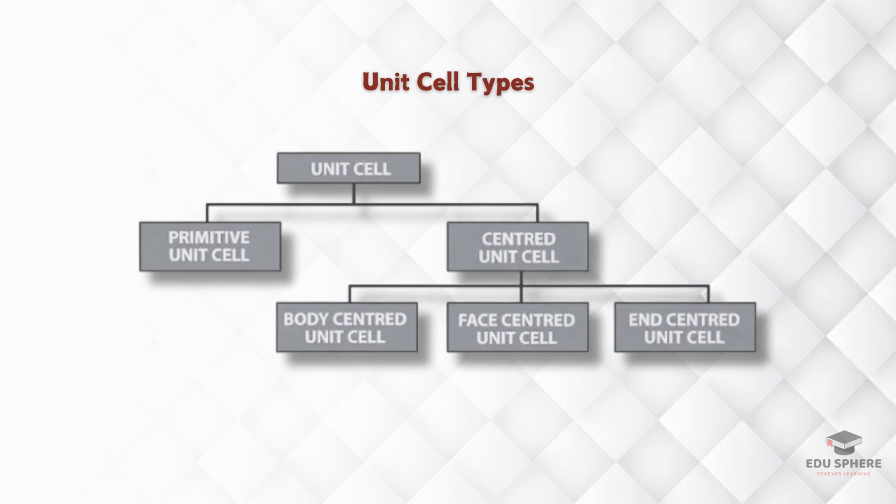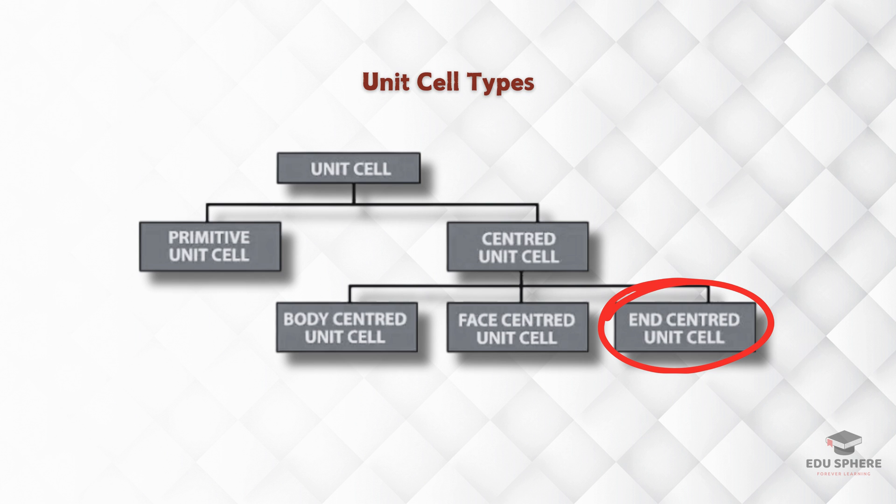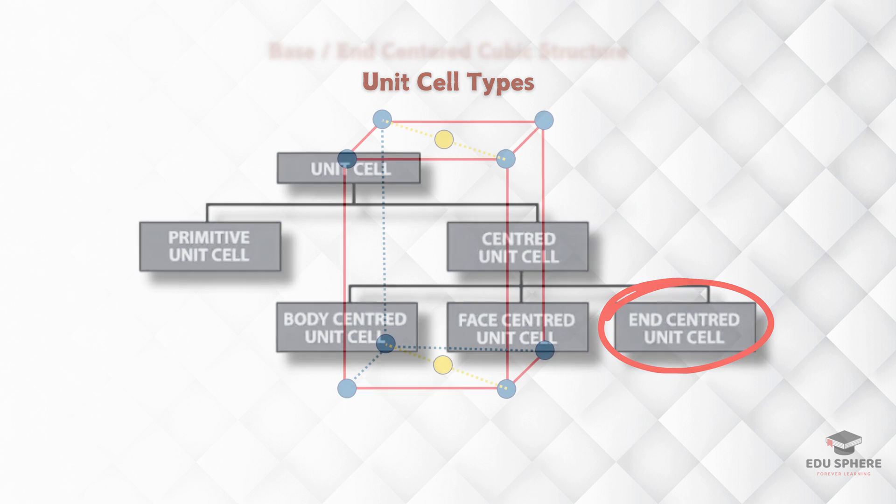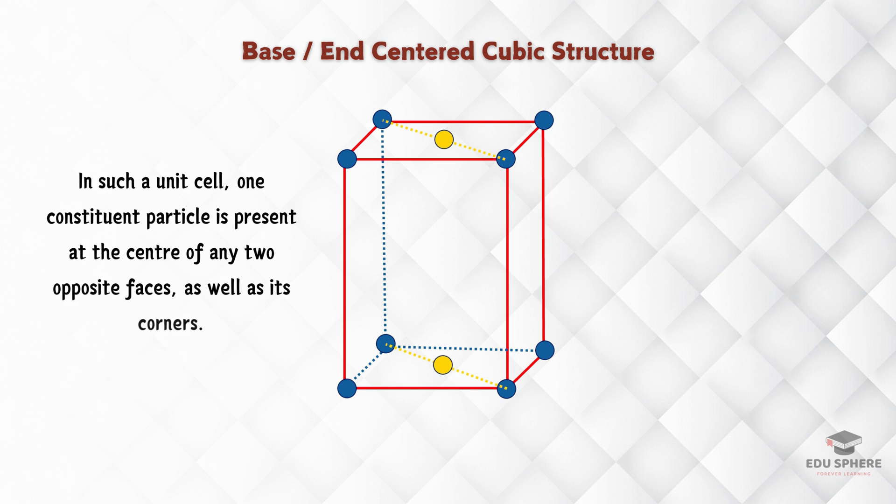There are actually other ways to arrange spheres besides simple cubic, BCC, and FCC. One less common arrangement is the base-centered or end-centered unit cell. Imagine taking a simple cubic unit cell and adding spheres to the center of two opposite faces. That's how we define the base-centered unit cell. It's not as common as the others we've seen, but it's still a possibility.